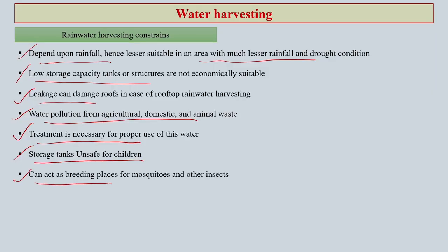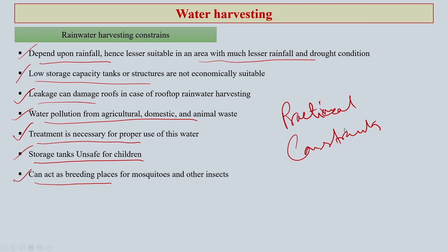Water harvesting structures can also act as breeding places for mosquitoes and other insects. Clear water is a very suitable breeding place for dengue mosquitoes. These are practical constraints and challenges that need to be taken care of while going for water harvesting.